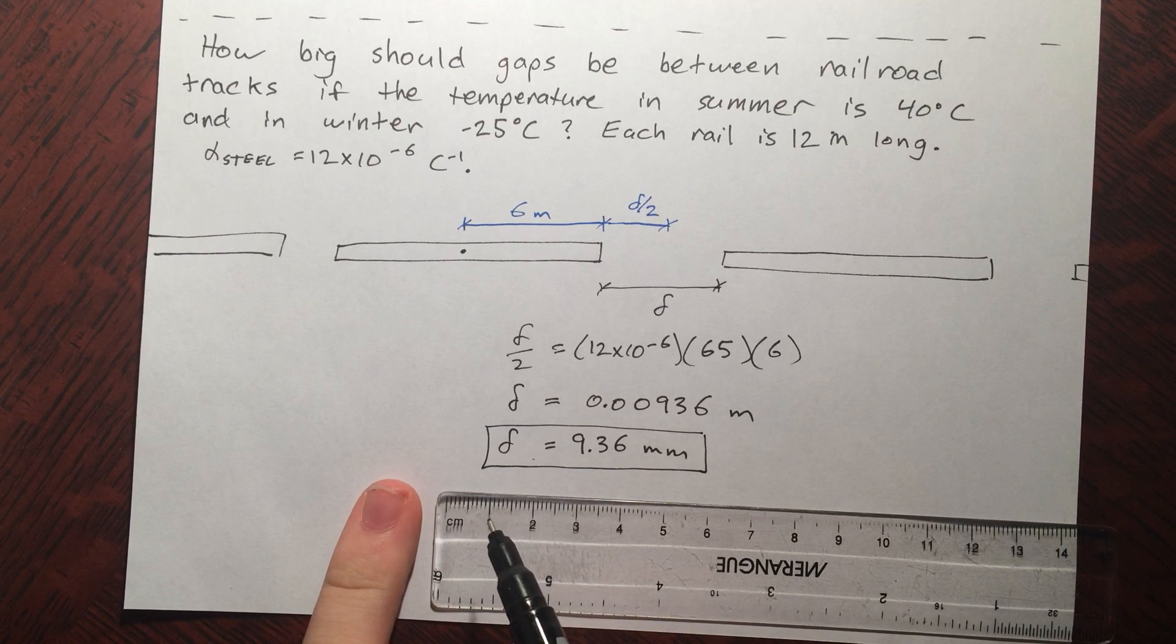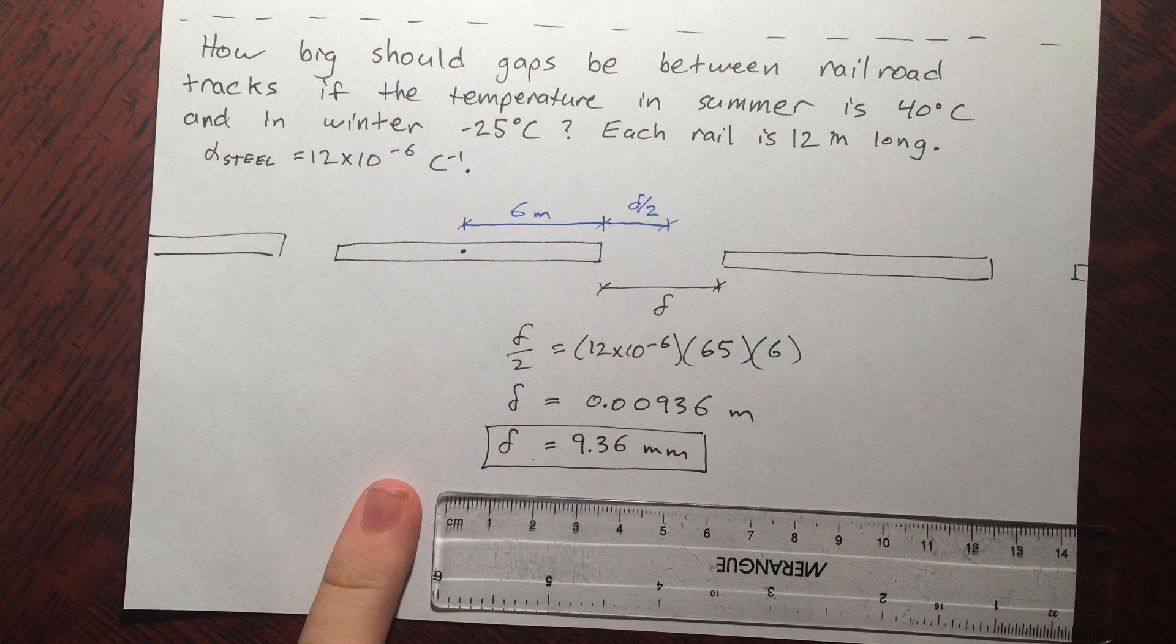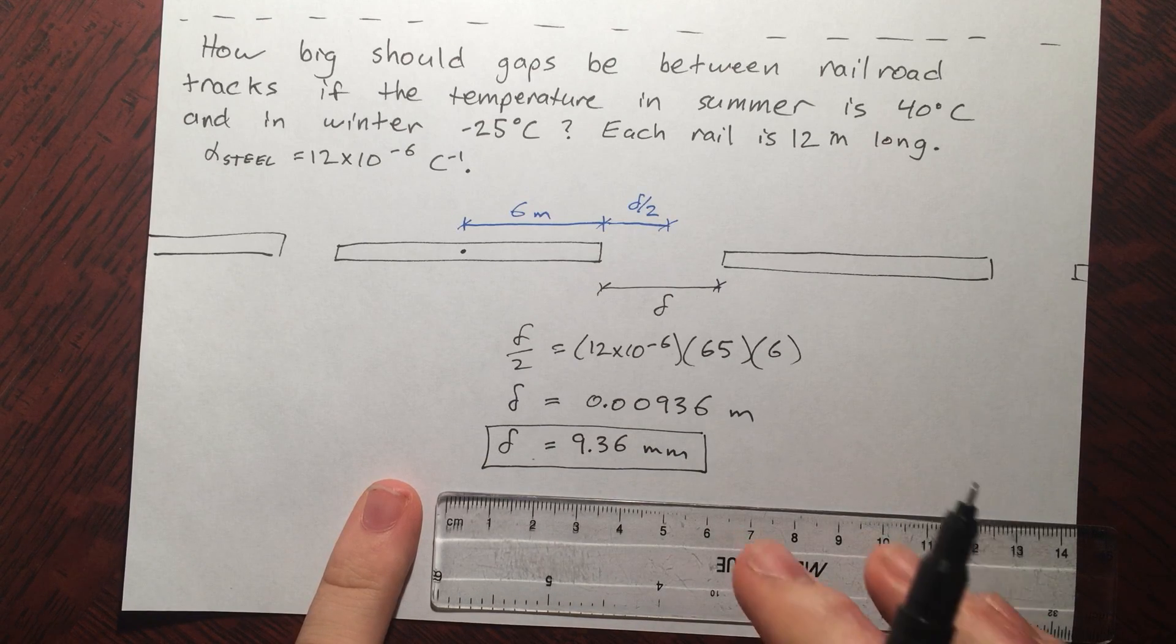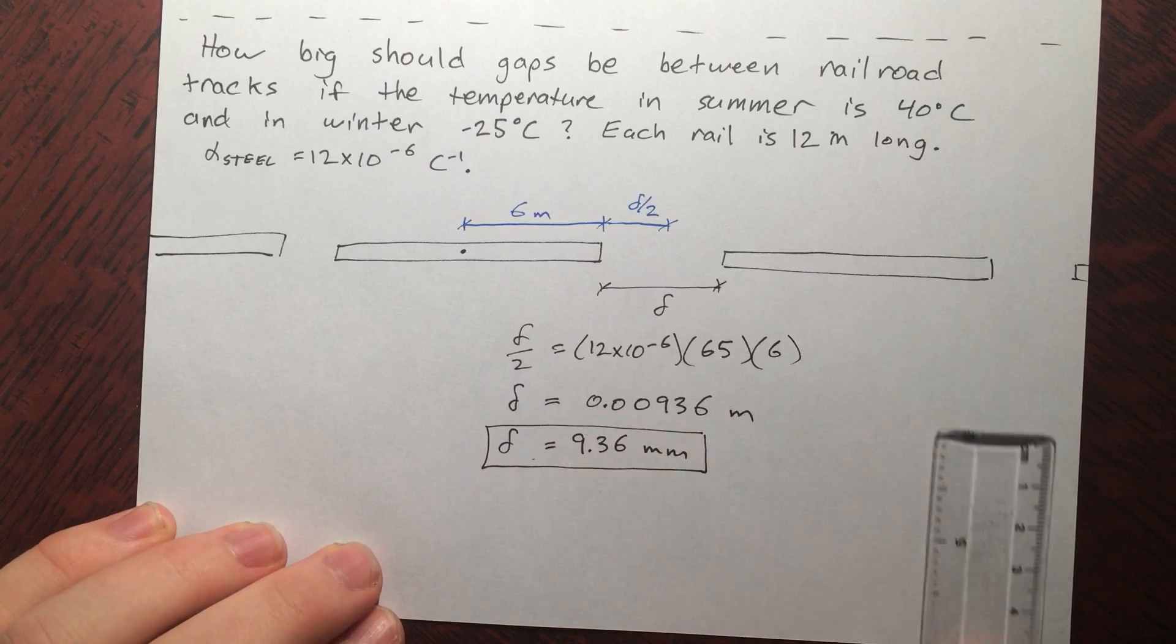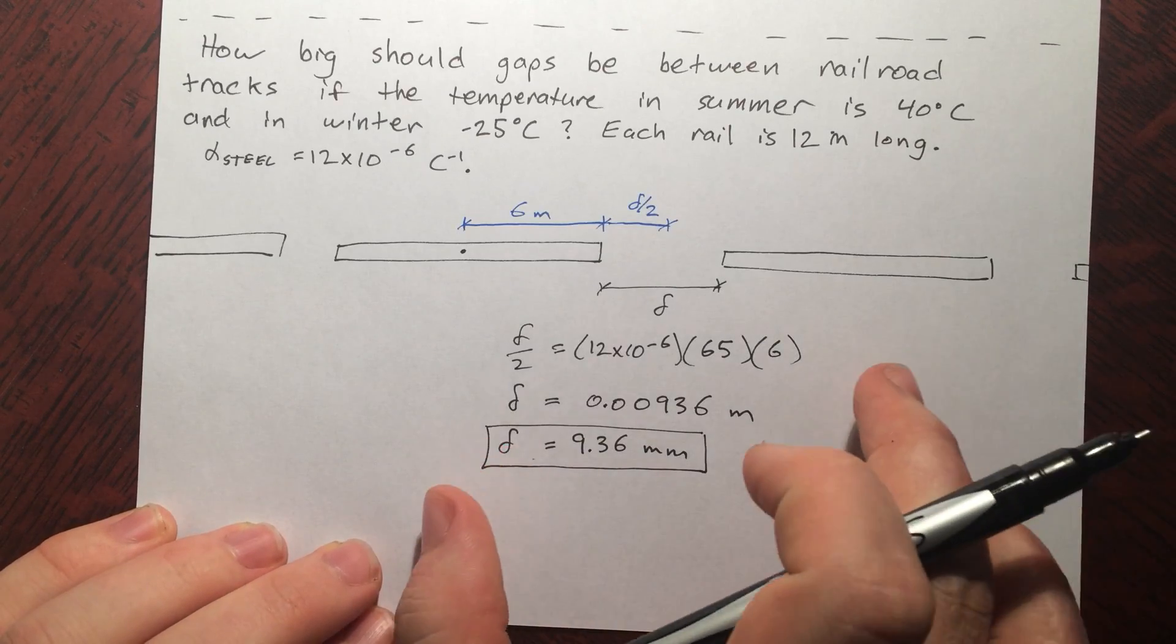Take my trusty ruler here. 9.36 millimeters, that will be about right there. So take my pinky, that's about that big. I haven't been down to the railroad tracks lately, but that seems a reasonable size to space the tracks out so that they don't mash into each other in the summertime.